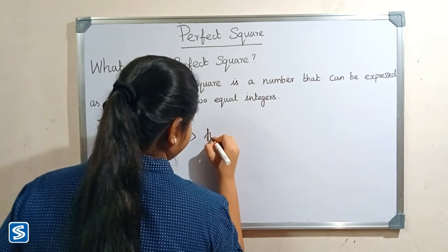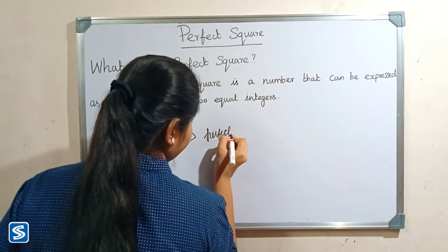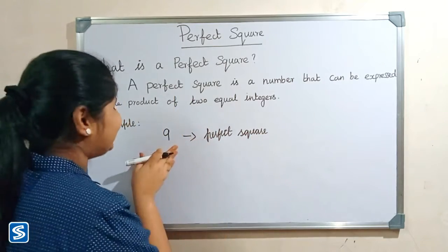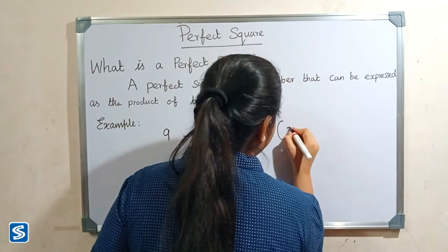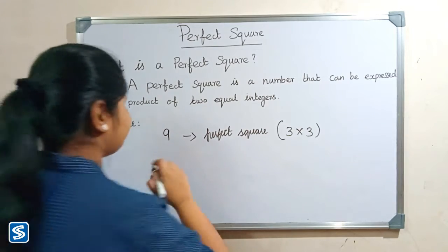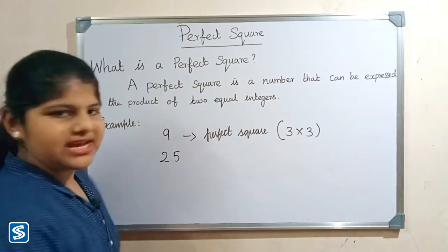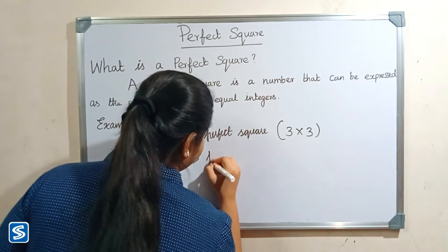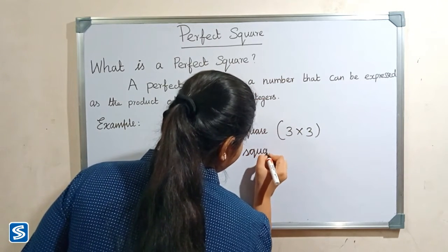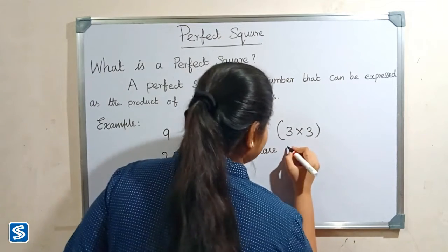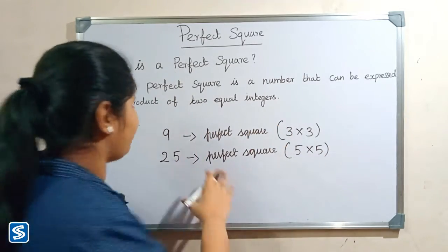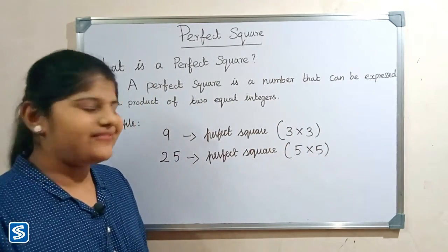Nine is a perfect square because nine can be expressed as three multiplied by three — that is the product of two equal integers. Next we will take 25. 25 is a perfect square because 25 can be expressed as five multiplied by five — that is the product of two equal integers. Next we will take eight.